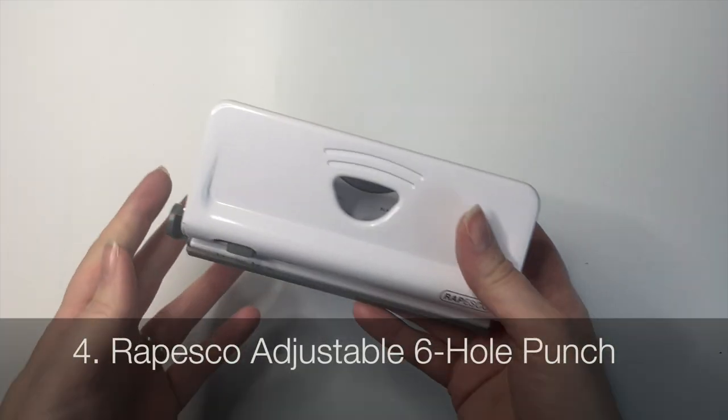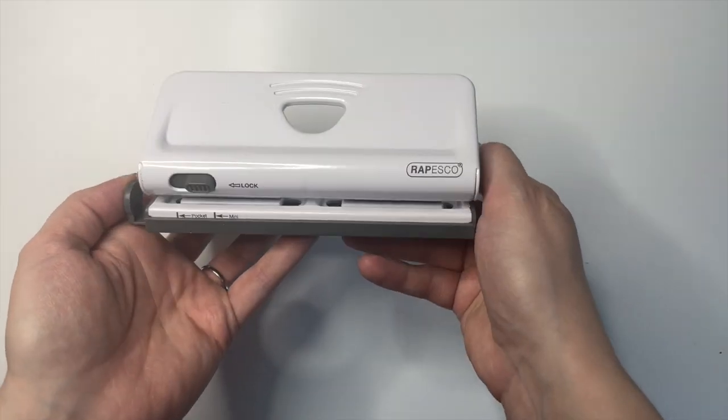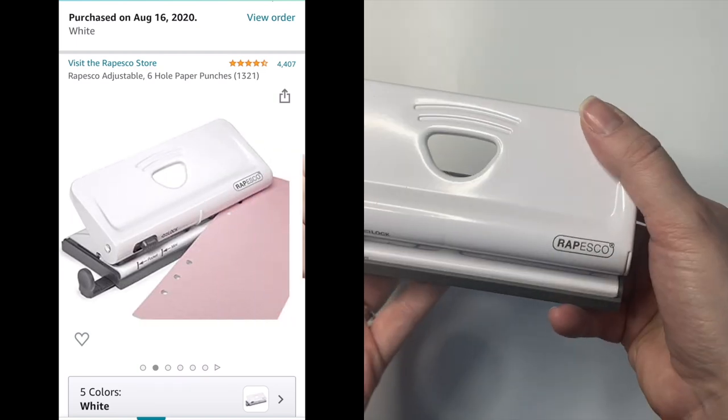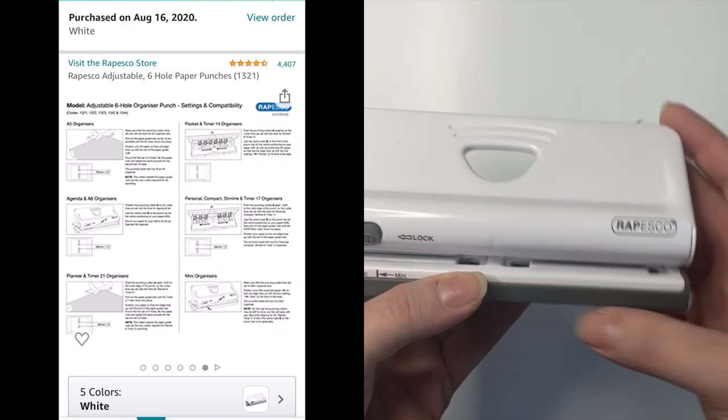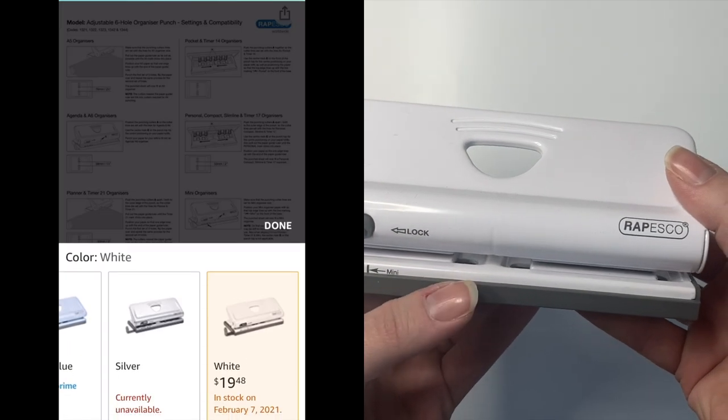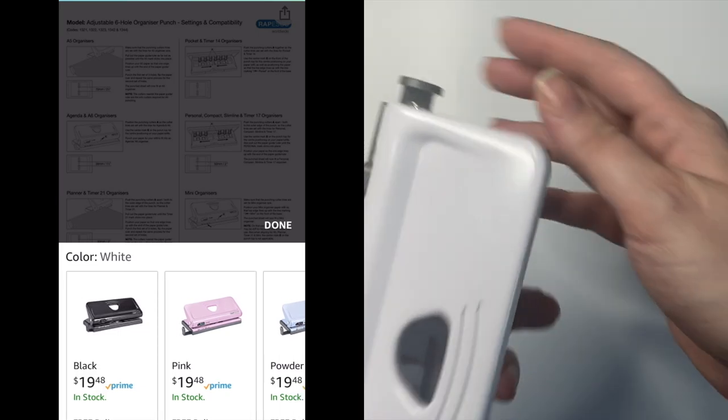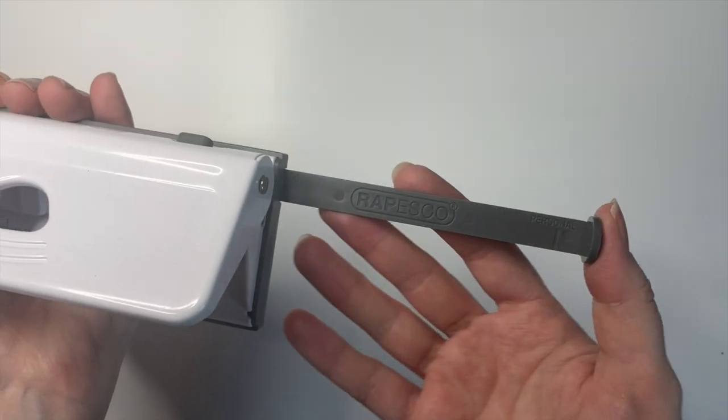The next thing is a universal hole puncher by Repesco. This is a really popular one. I heard about it on like a planner Facebook group or something like that. And this comes in a bunch of different colors. This is obviously the white one. And it will punch pocket size, mini size, personal size, A5.